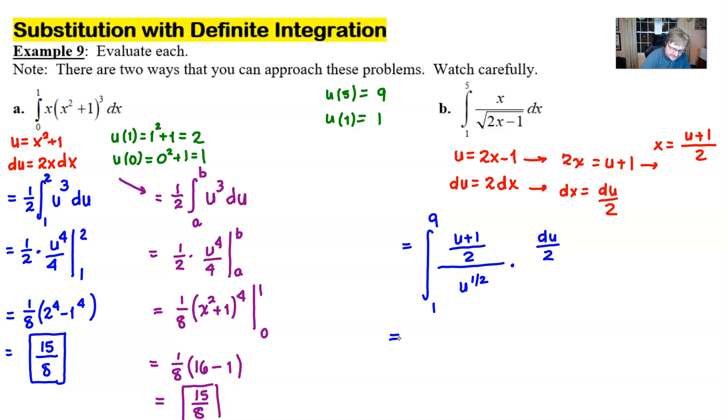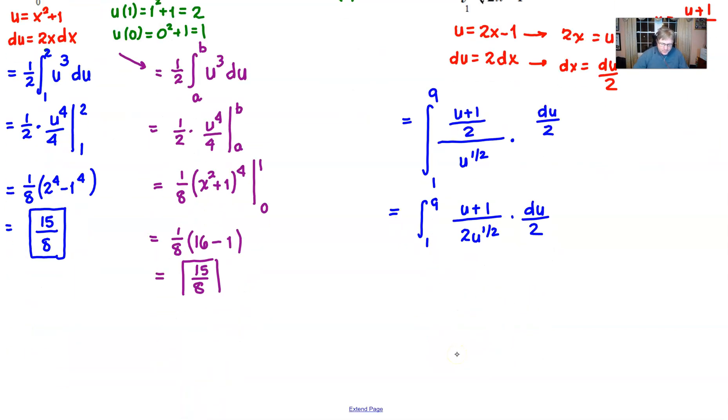So what I would suggest is we just multiply by some reciprocals here. So first of all u plus 1 divided by 2 divided by u to the half essentially just puts that u to the half in the denominator there. This du over 2 that's out here is just going to double up that 2 that's already in the denominator. And so scroll down I'm going to factor out a 1 fourth and really I'm just integrating u plus 1 over u to the half.